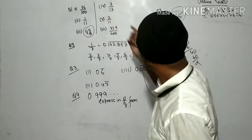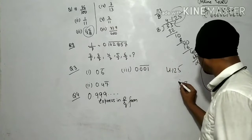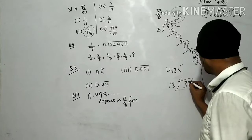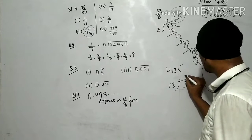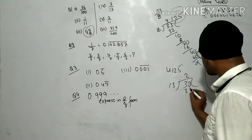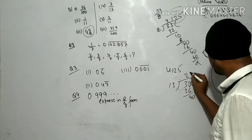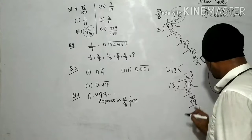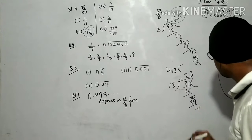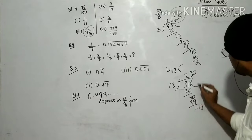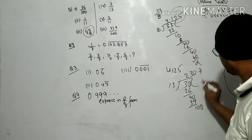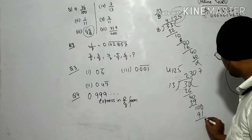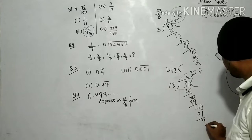Now, 3 upon 13 — we write 3 inside and 13 outside. Bring down 0; 13 × 2 = 26, remainder 14; 13 × 1 = 13, then 13 × 3 = 39, then bring down 10; 13 × 7 = 91, remainder 9. We continue dividing.